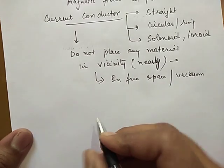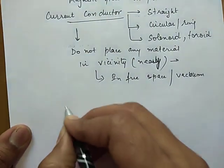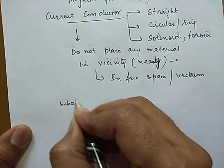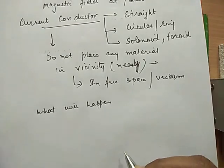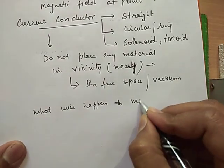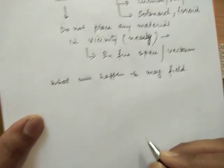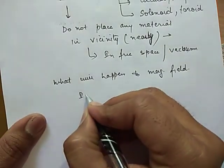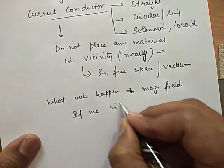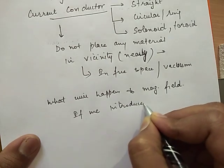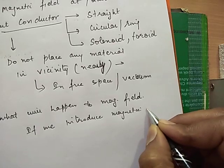Now, in this chapter we are going to study what will happen to the magnetic field if we insert or introduce magnetic material.